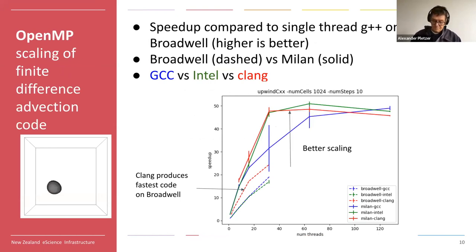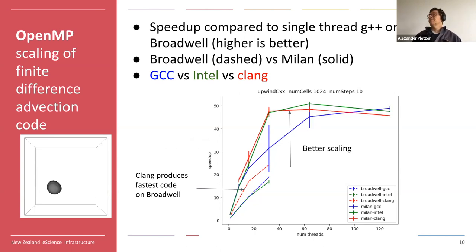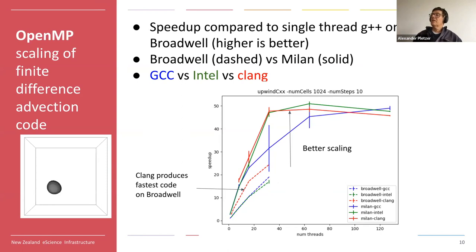I'm going to share some early benchmark results to give you an idea of what's different and how these different compilers perform for one code. Your mileage may vary — you might find completely different results — but it's still interesting to see what level of variation you can expect. Green is Intel, blue is GCC or GNU compiler, and red is the new clang compiler. The dashed lines represent performance on Mahuika Broadwell — the Intel CPUs you've been using — and the solid lines are for the new Milan environment.